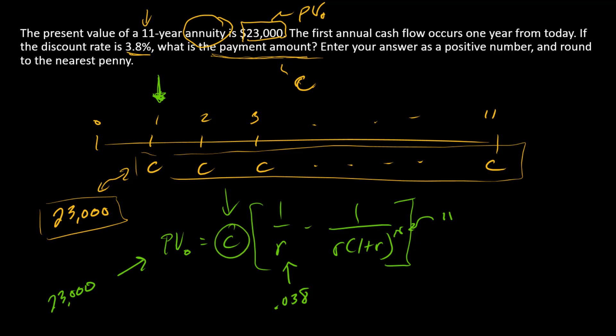When we solve for the cash flow amount, we have C equals $2,597.19. So that's the answer.